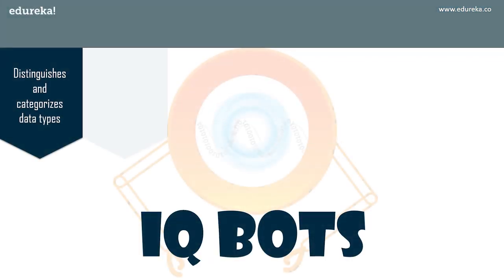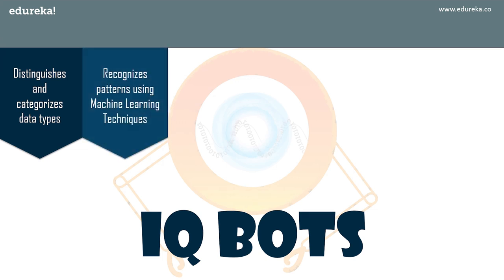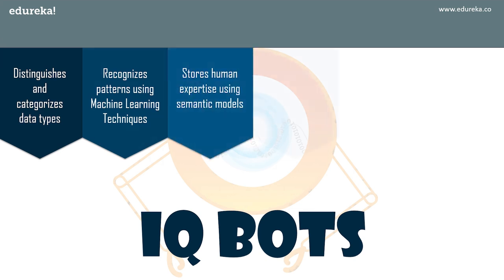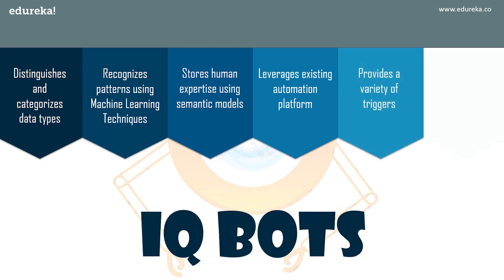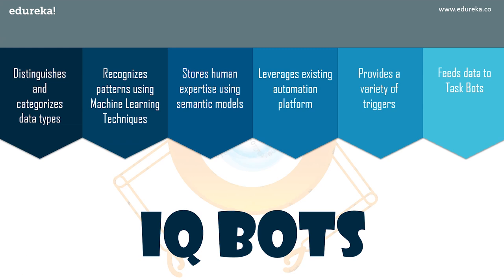IQ bots distinguish and categorize data types and formats by applying multiple layers of classification methods. They use machine learning techniques to recognize patterns, store human expertise using semantic models, and leverage existing automation platforms. They also offer a variety of triggers such as emails, files, folders, and workflows, and feed the extracted data to task bots. In summary, IQ bots allow cognitive automation with the help of machine learning techniques.